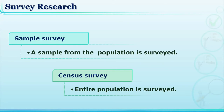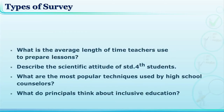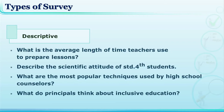Let us now come to the types of survey research. On the basis of involvement of subjects, surveys can be classified into two types: the sample survey and the census survey. The sample survey considers a small group from the whole population, while the census survey includes all members of the population. Consider these research questions: What is the average length of time teachers use to prepare lessons? Describe the scientific attitude of standard five students. What are the most popular techniques used by high school counselors? What do principals think about inclusive education? These questions are asking for some description, so these surveys are known as descriptive surveys.